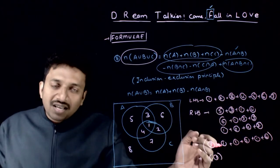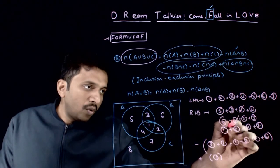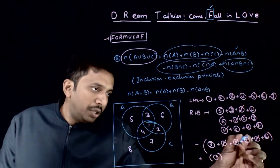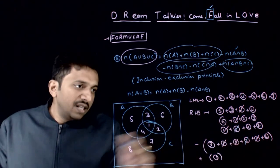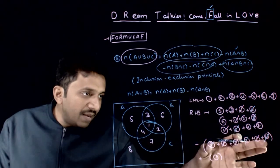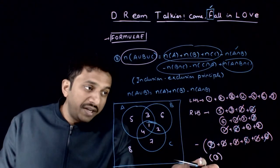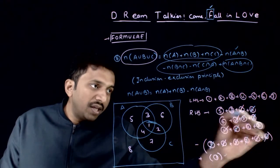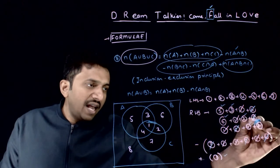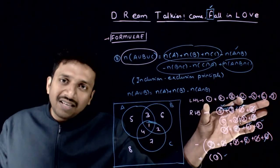Doing all of this, you can see that region 1 appears multiple times with positive and negative signs — three 1s cancel out. Region 2 cancels, region 3 cancels, and region 4 cancels. All negative-sign elements cancel, leaving exactly regions 1, 2, 3, 4, 5, 6, and 7. That means LHS is exactly the same as RHS, proving the formula.